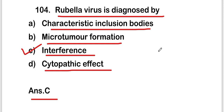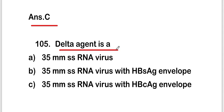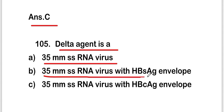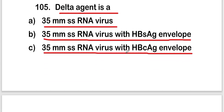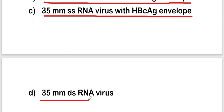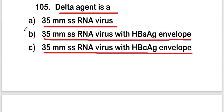The next question is: delta agent is — a 35nm single-stranded RNA virus, a 35nm single-stranded RNA virus with HBsAg envelope, or a 35nm double-stranded RNA virus? The right answer is option B, that is a 35nm single-stranded RNA virus with HBsAg antigen envelope, which is known as the delta agent.